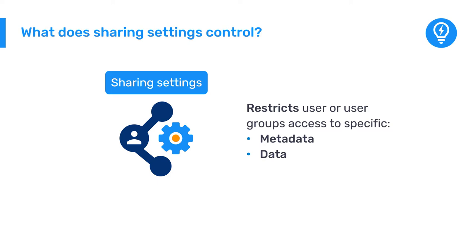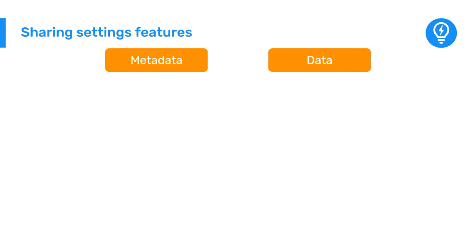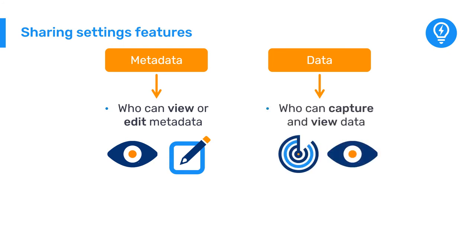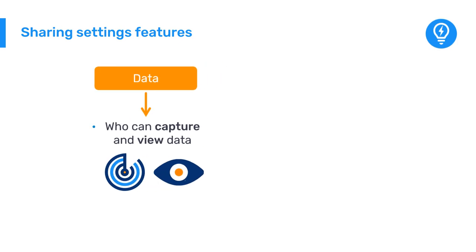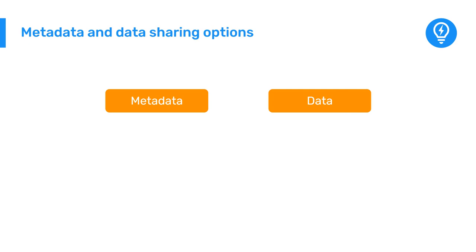You can apply sharing settings for both metadata and data. Metadata sharing determines if a user or user group can view or edit a piece of metadata in the system. Data sharing determines if a user or user group can capture or view data associated with a particular object, both in data entry and analysis applications. Applying data sharing settings is a required step when configuring a dataset in DHIS2, because the default data setting is private, meaning no one will be able to capture or view data for your dataset until the sharing settings are updated.